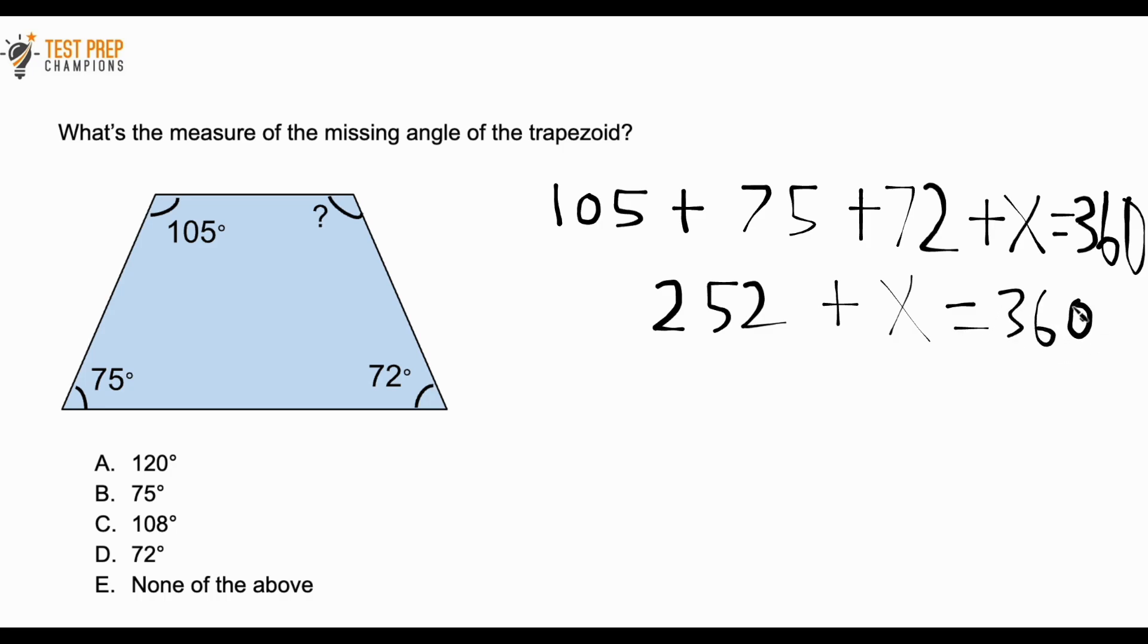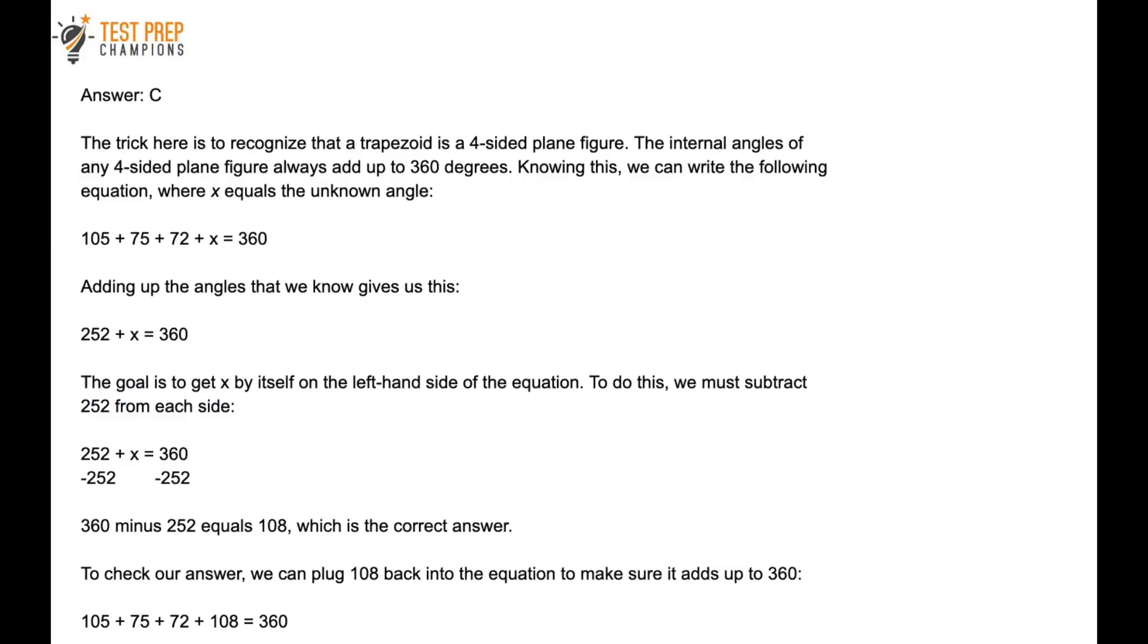In my calculator, I'm going to do 105 plus 75 plus 72, and I get 252. So we can make this simpler: 252 plus X equals 360. Now to get the X, all we have to do is 360 minus 252. When we do that, we see that the answer is X equals 108. I'm going to put the notes for this question up on the screen for you. Take all the time you need with studying this.